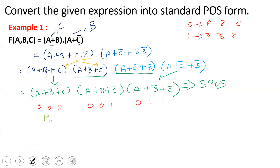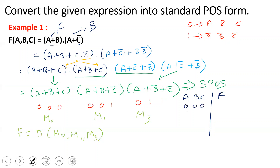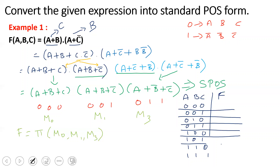Now we construct the truth table. There are 3 input variables A, B, C and 1 output F. With 2³ = 8 combinations, the rows are: 0,0,0 / 0,0,1 / 0,1,0 / 0,1,1 / 1,0,0 / 1,0,1 / 1,1,0 / 1,1,1. The output F is 0 for the max-term rows M0, M1, and M3, and 1 for the remaining rows.